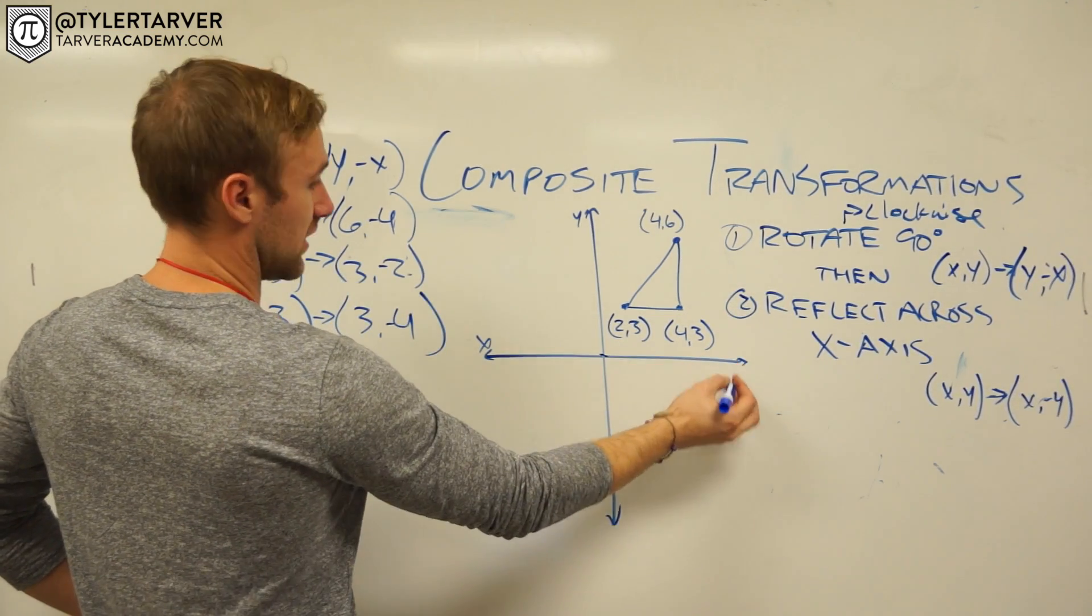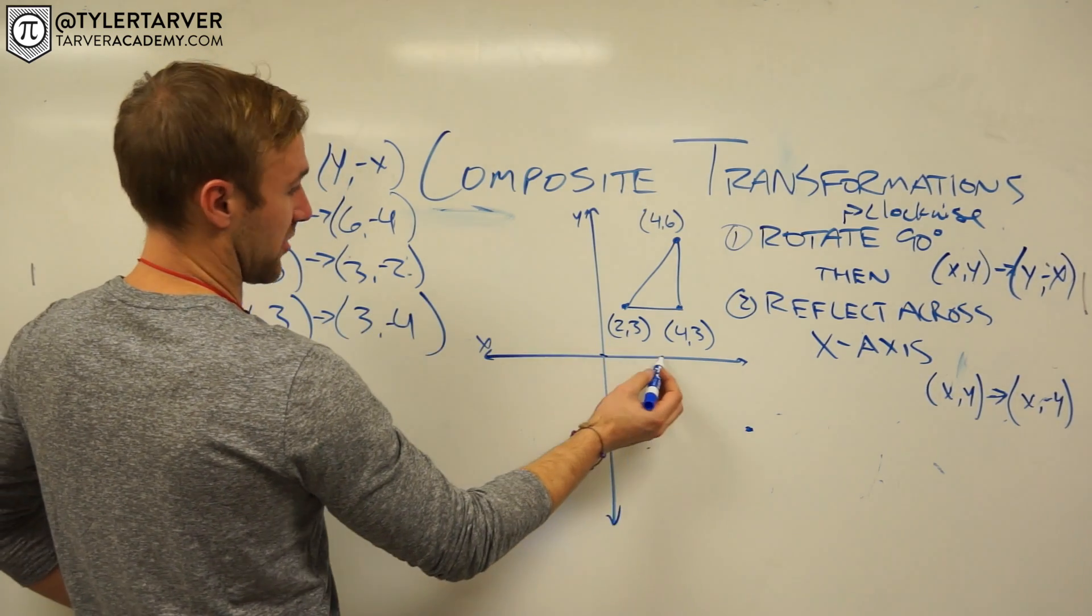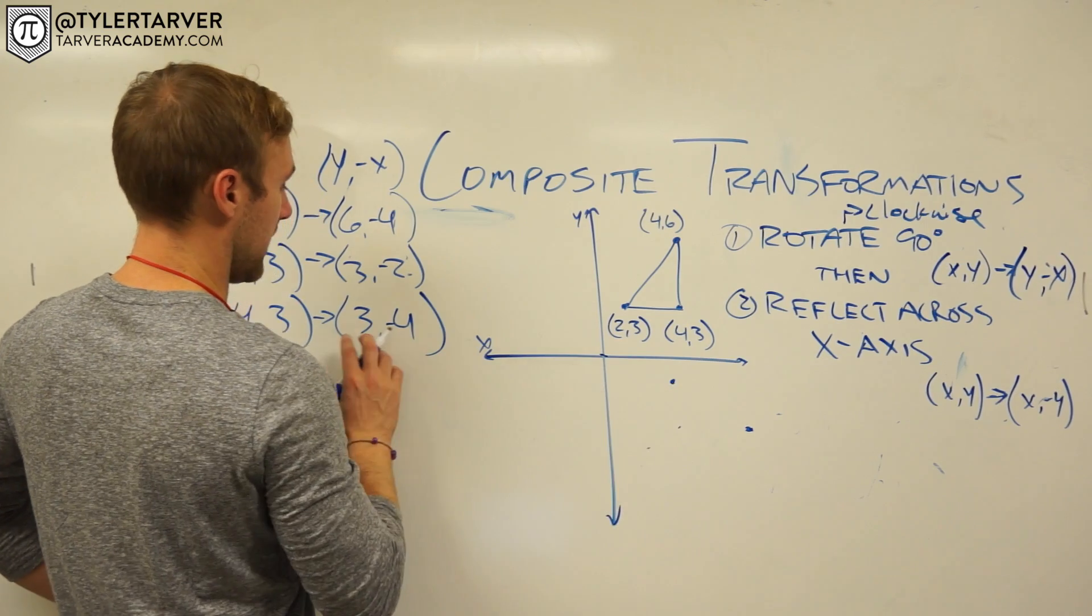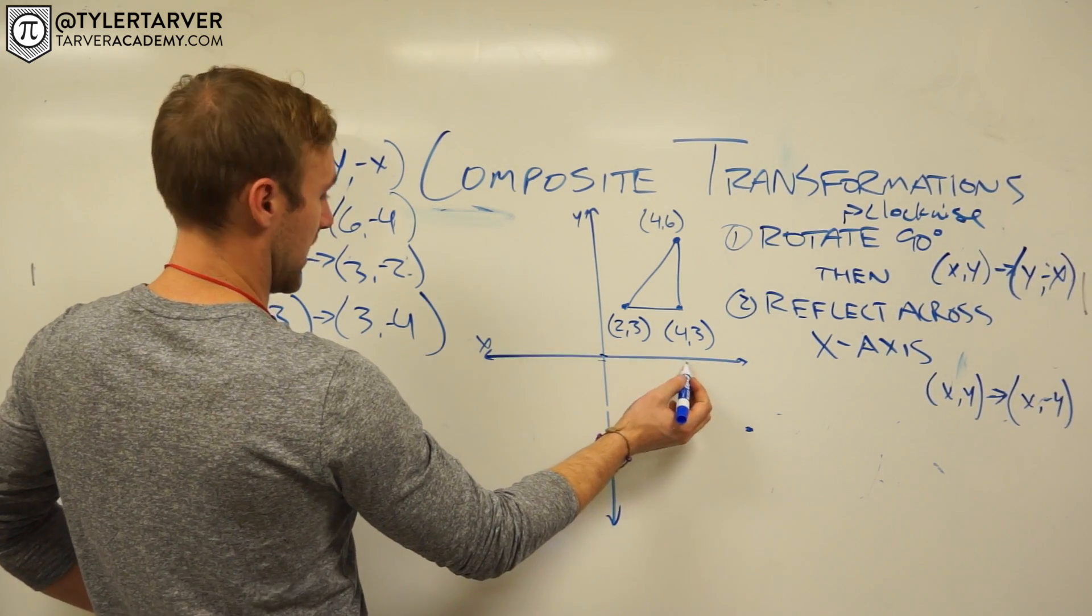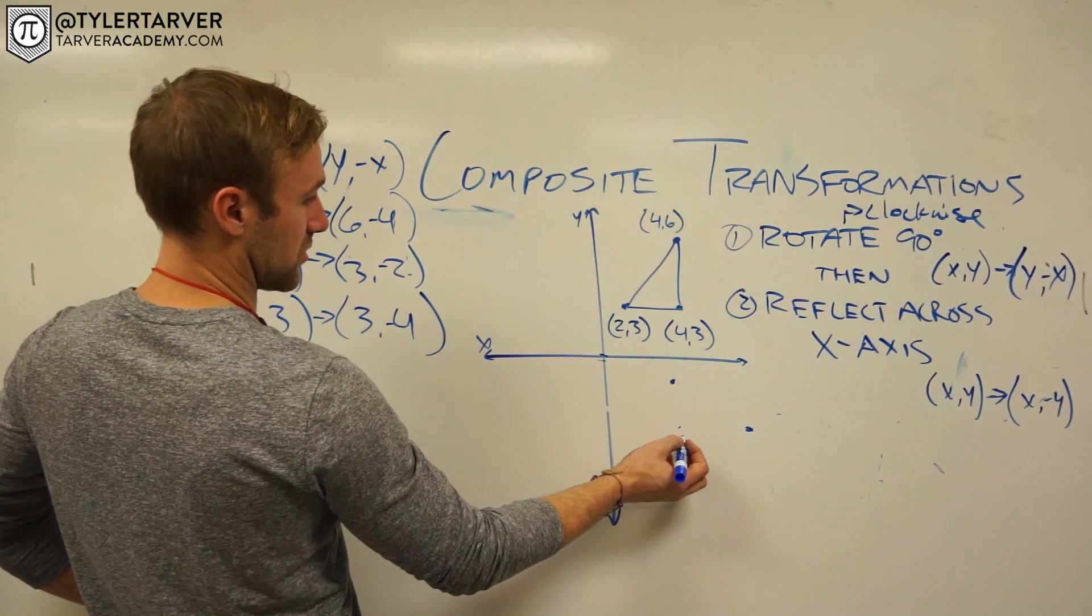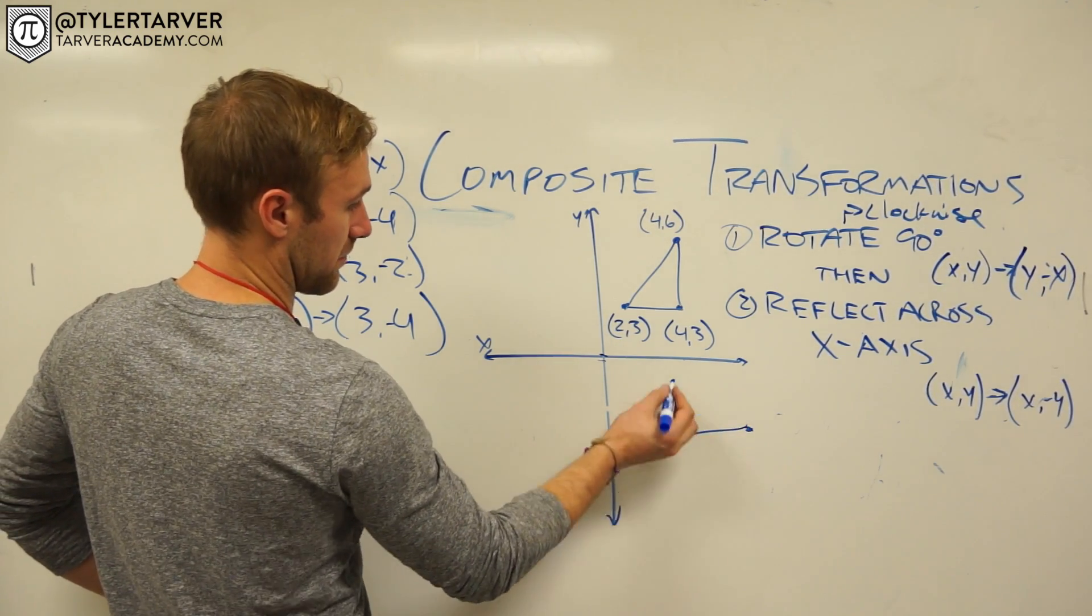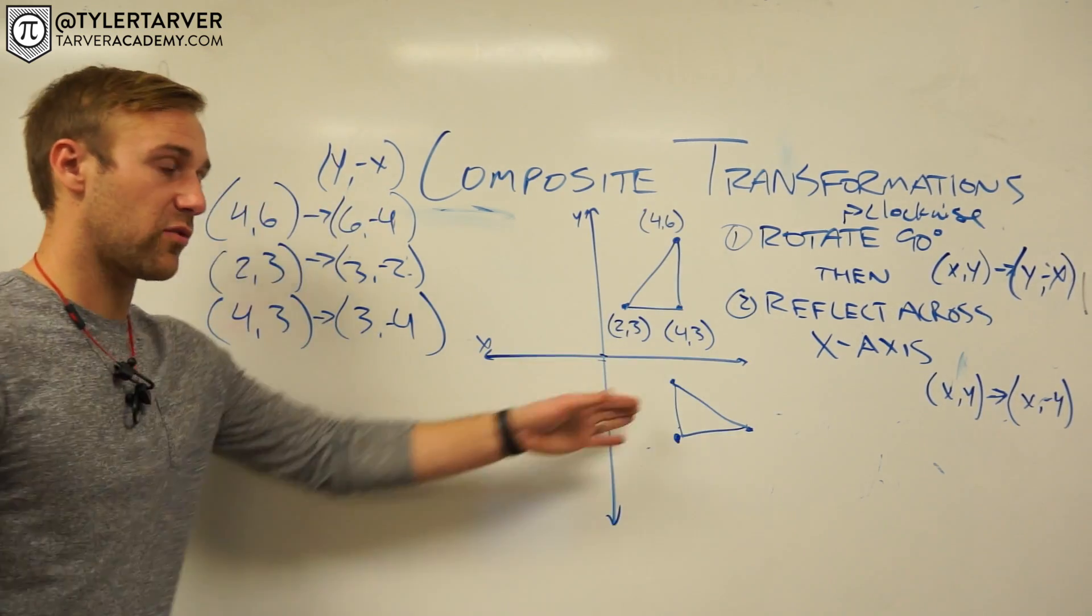Okay, I'm going to do it about the origin. So now I just plot my points. I go over six, down four. I go over three, down two. Sorry, that'd be right there. And then over three, down four. Wow, this is all jacked up. I think that's right. That looks rotated. Boom. Okay, so we've rotated it.